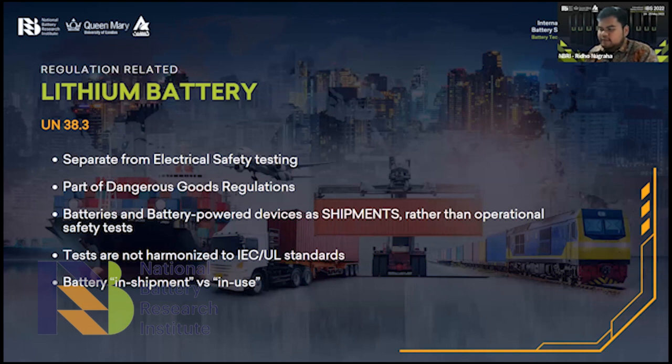T6 and T8 are categorized as destructive tests, so we need to test the cells only, not the whole products. These are impact and crash, and then overcharge and forced discharge. For the details about the UN 38.3 testings, the document can be downloaded — there are many parameters that need to be done. UN 38.3 is separate from electrical safety testings and is part of dangerous goods regulations because it controls shipments, not the usage of products, so the tests are not harmonized to IEC or UL standards — this regulation controls the shipment process of lithium battery products.